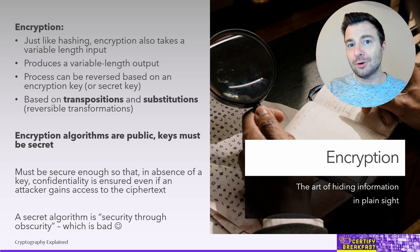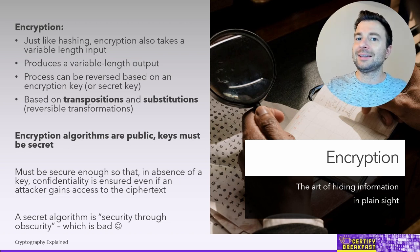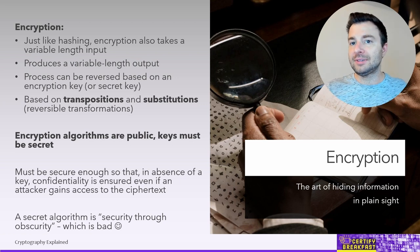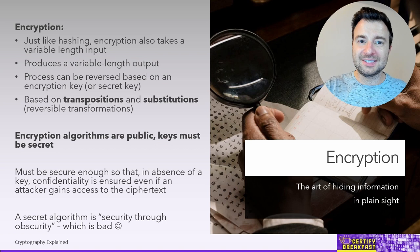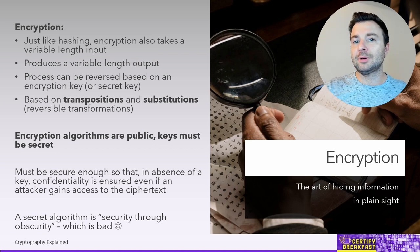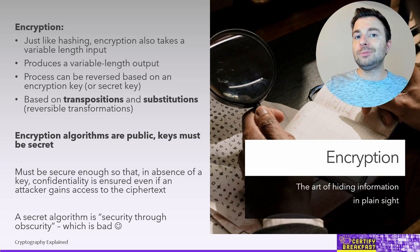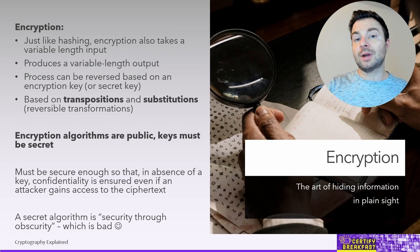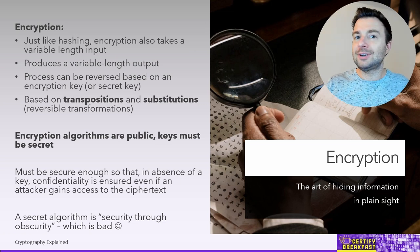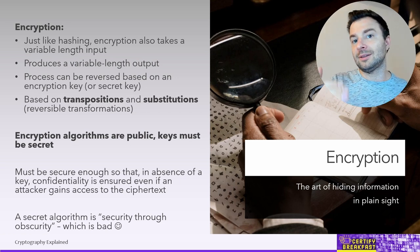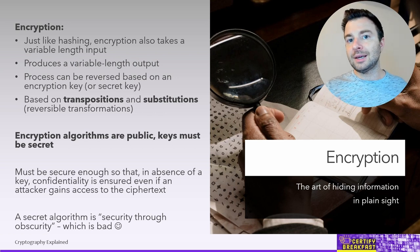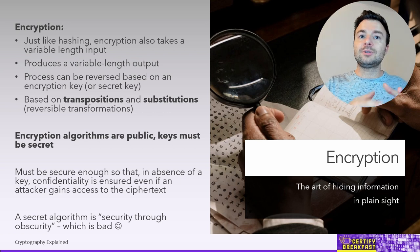Never rely on the secrecy of the algorithm. Relying on the secrecy of the algorithm is called security through obscurity, and this is bad. It's not considered true security because with computers, hiding information without encrypting it is not a valid option. The algorithms are just mathematical operations, and some have weaknesses making them susceptible to cryptanalysis. You're probably not going to develop a better algorithm than those that have been thoroughly tested and attacked over the past 20 to 30 years. So use those thoroughly tested algorithms and rely on the secrecy of the encryption key.